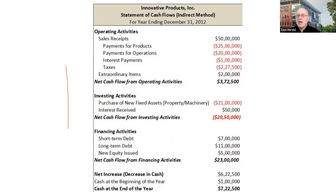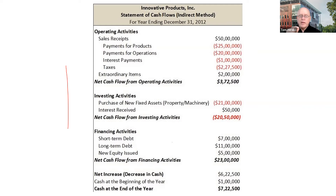If you have too much inventory and need cash, you might sell it down — even at a loss — as an investing activity. If you strategically want to reduce debt, that's a negative cash flow to pay off debt. The idea is to keep yourself liquid, ensuring cash coming in covers all three areas of your cash flow statement.